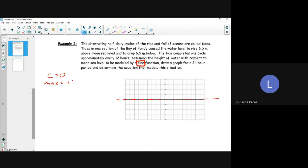So what is our max height in this question? Positive 6.5 meters. And what is the minimum? Negative 6.5 meters, which is why our c is zero, because 6.5 plus negative 6.5 gives us zero.